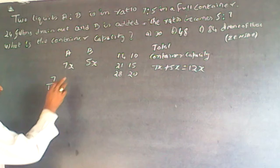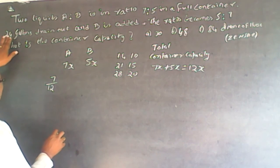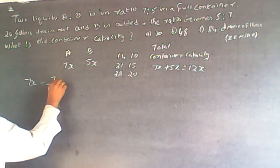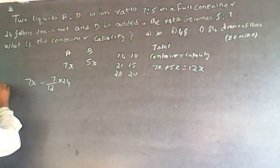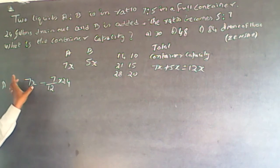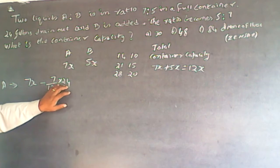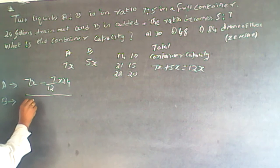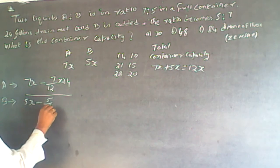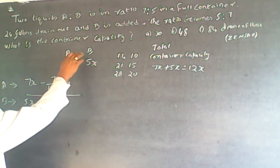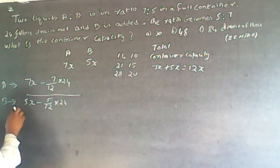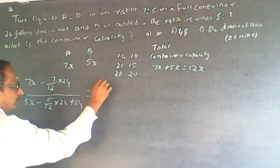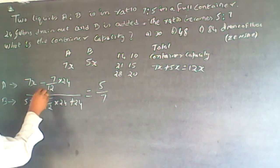The proportion of A will be 7/12 and B will be 5/12. Now from 24 drained: A remaining = 7x − (7/12)×24. B remaining = 5x − (5/12)×24. Then 24 of pure B is added, so B becomes: 5x − (5/12)×24 + 24. The new ratio becomes 5:7. Now solving: 7/12×24 = 14 and 5/12×24 = 10.